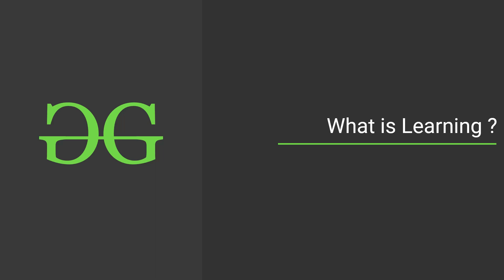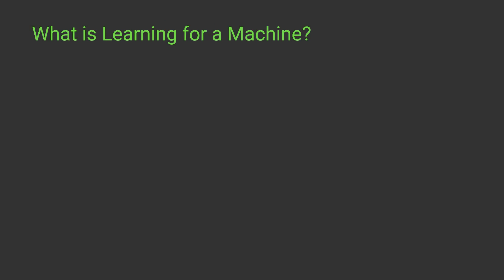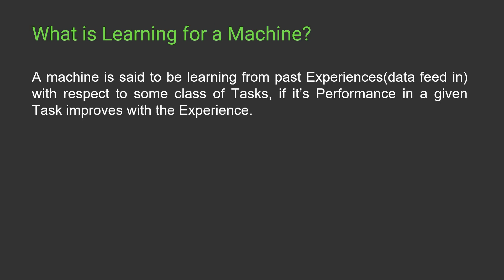Now we are understanding machine learning in depth, but what exactly does learning mean? How can we teach something to a machine? A machine is said to be learning from past experience with respect to some class of tasks if its performance in a given task improves with that experience. A machine is said to be learning if we feed it a task and it keeps on improving its performance.